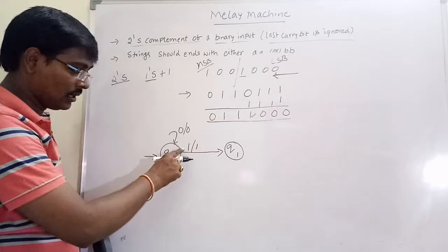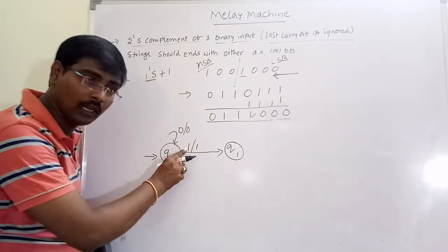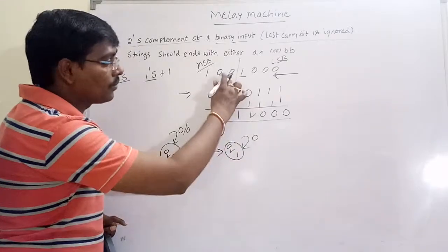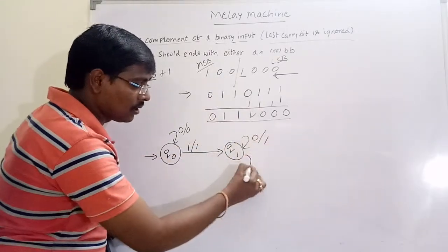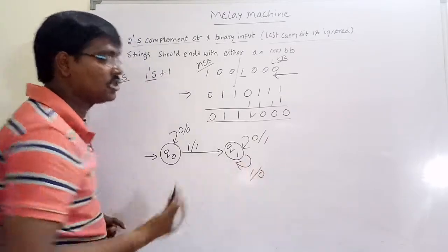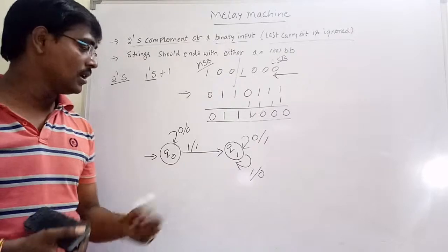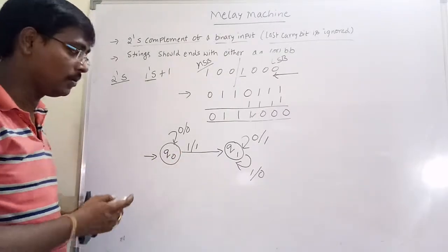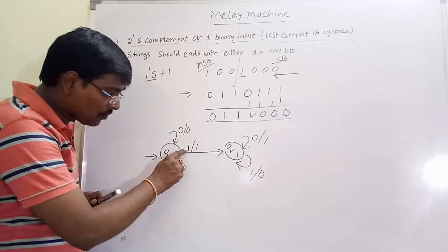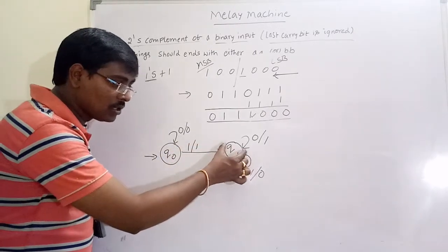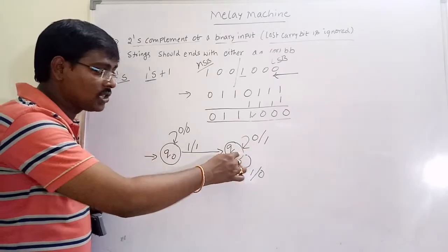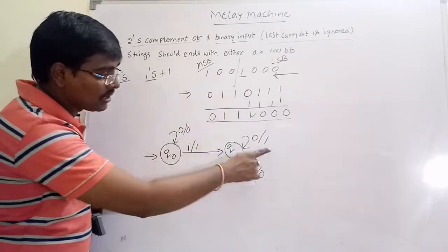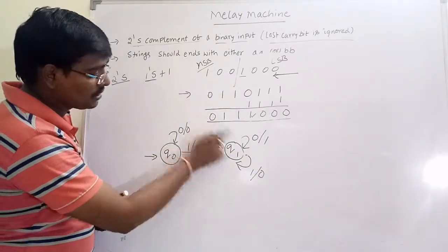On reading a 1 from q0 we move to state q1. After moving to q1 — that is, after reading the first non-zero term — if input is 0, output is 1, and if input is 1, output is 0. This is the Mealy machine for the given problem.